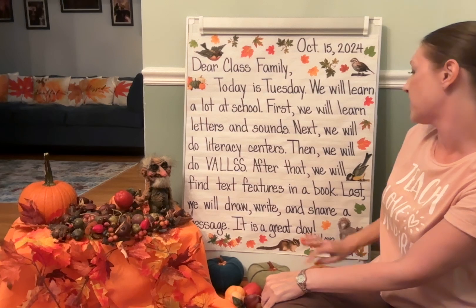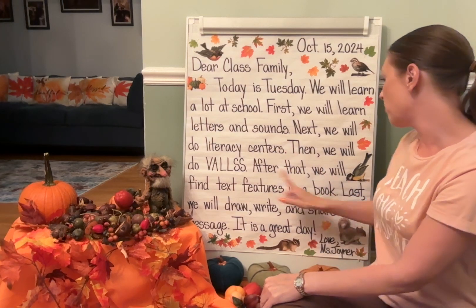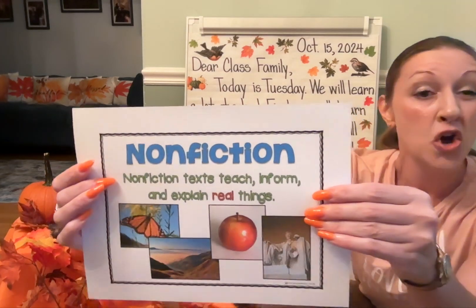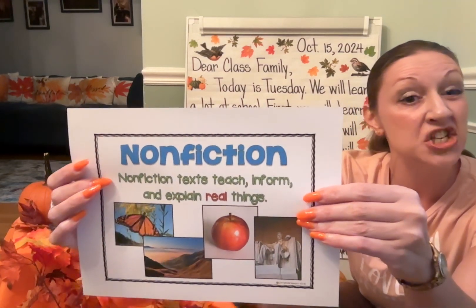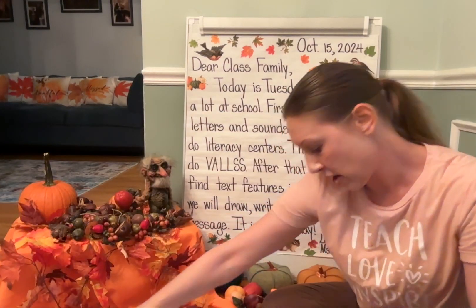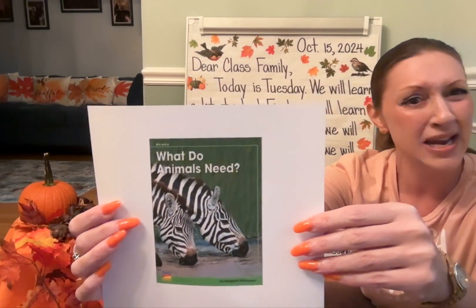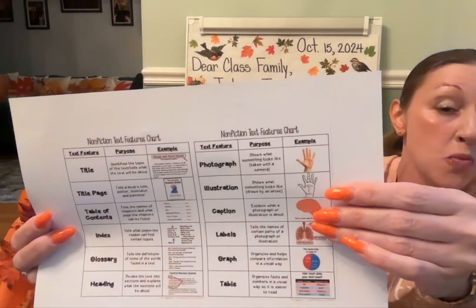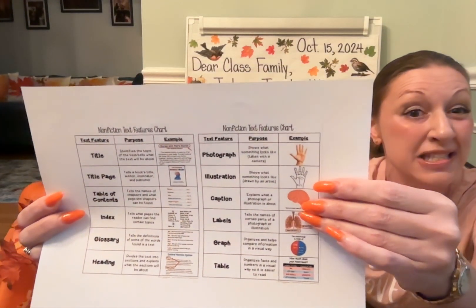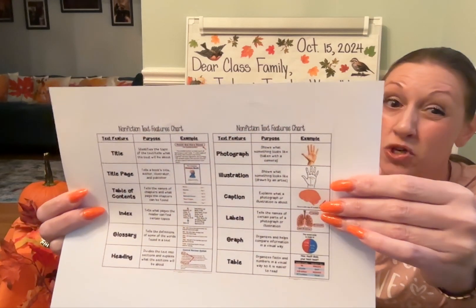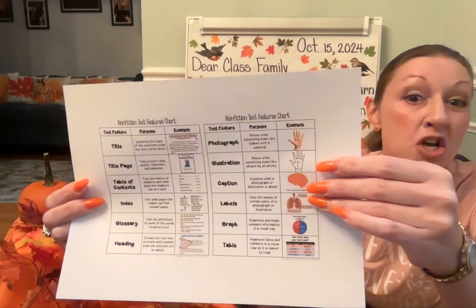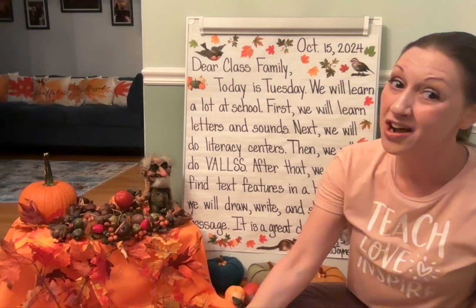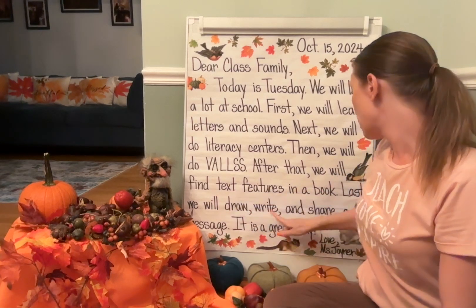After that, we will find text features in a book. We're going to look at a nonfiction text — remember, nonfiction texts teach, inform, and explain real things. We'll be looking at what animals need and reading using text features. There are so many different things: we'll have captions, labels, photographs, and words that are in bold print. These text features help good readers understand nonfiction texts.